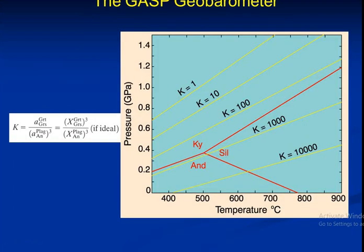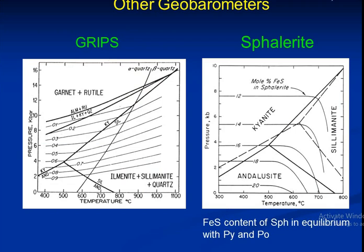The GASP geobarometer shows curves for kyanite, andalusite, and sillimanite at various temperature and pressure conditions. Other geobarometers include GRIPS and spillerite — GRIPS is in equilibrium with pyrope and phlogopite — along with kyanite, sillimanite, and andalusite.